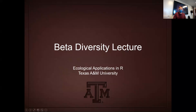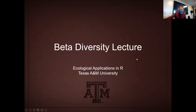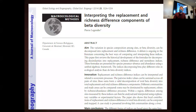Today we'll cover beta diversity, a continuation of the multivariate statistics we started with the vegan package and clustering. This has been a hot topic in the last 10 years. A nice overview was provided in a paper by Pierre Legendre published in 2014, and I'm going to borrow a conceptual figure from that paper on one of the next slides.